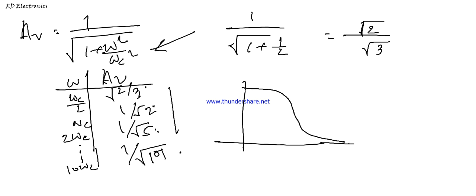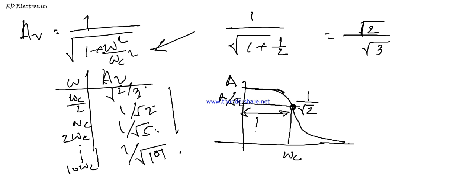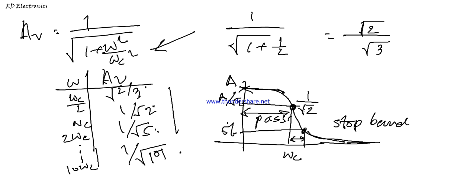Below the cutoff frequency, the gain is nearly constant — this is the pass band. At the cutoff frequency, the gain is 1/√2, which is the RMS value. From the starting point to this point is called the pass band. From there down to 5% of the maximum value is the transition band. Beyond that, the wave is attenuated — this is the stop band.